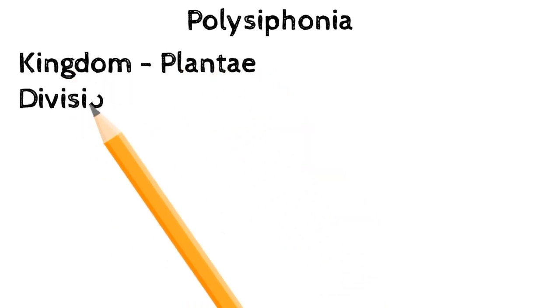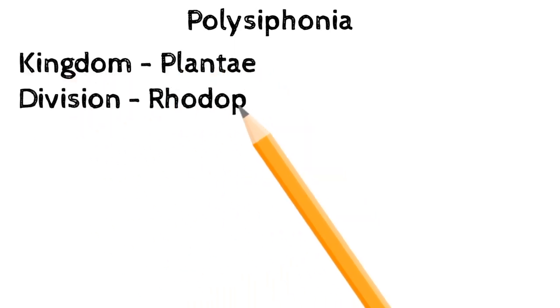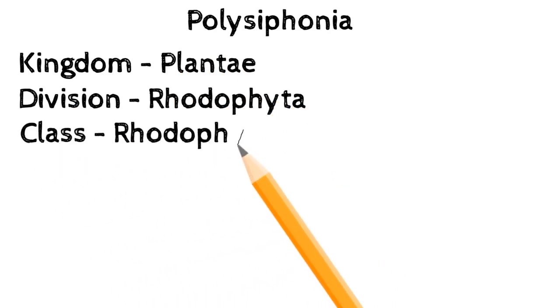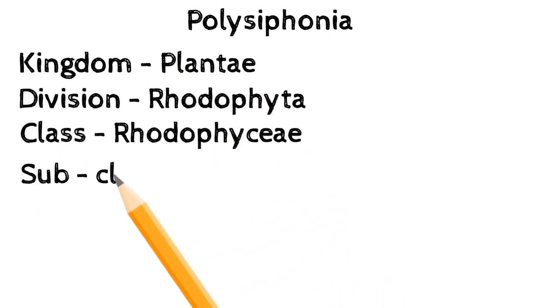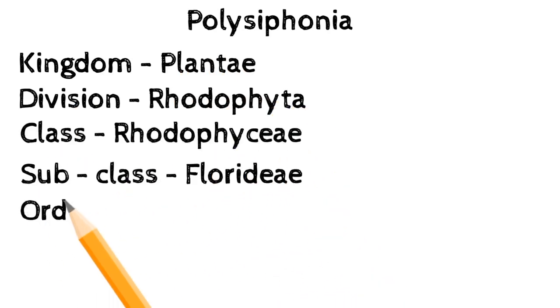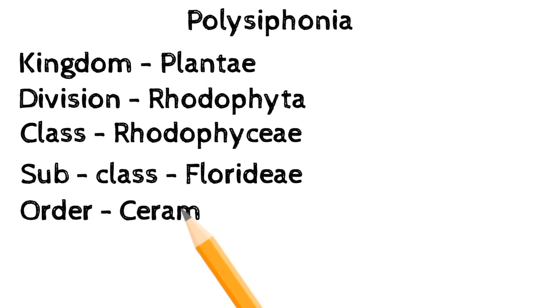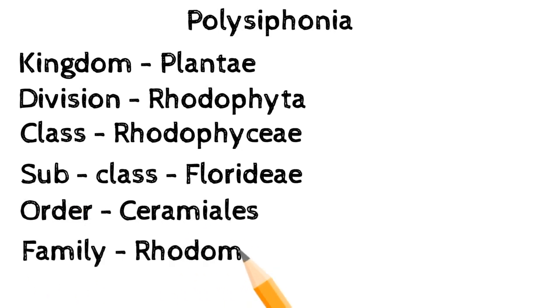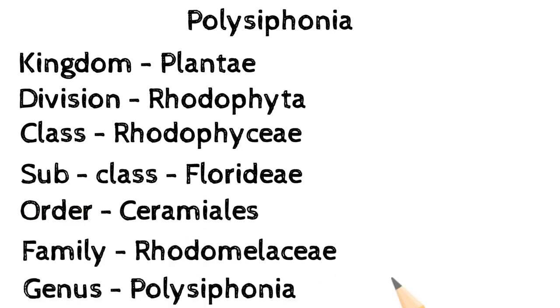Polysiphonia: Kingdom Plantae, Division Rhodophyta, Class Rhodophyceae, Subclass Florideae, Order Ceramiales, Family Rhodomelaceae, Genus Polysiphonia, Species: fastigiata, ursialata, platycarpa, variegata, elongata.